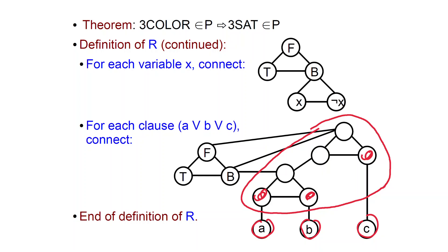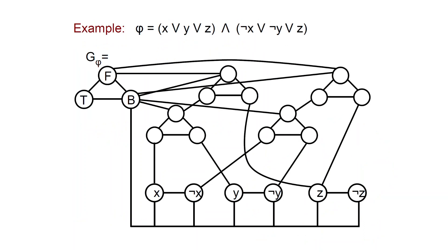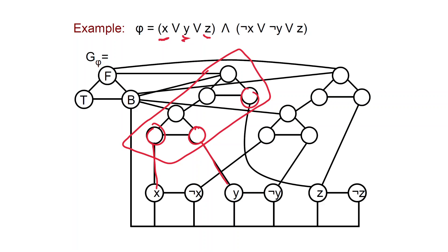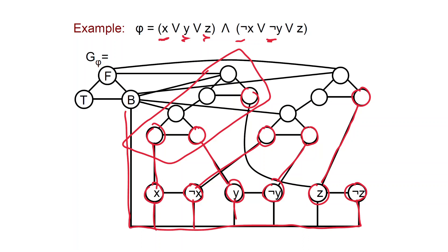Here is a specific example of a graph for a formula with two clauses. This portion corresponds to the first clause X or Y or Z — one node connects to X, the second to Y, and the third to Z. In the other clause, for example, not-X is present, so the first node connects to not-X, the second to Y, and the third to Z. All the variable nodes are connected to the base color in the palette, and the clause gadgets are connected to the palette in that specific way.